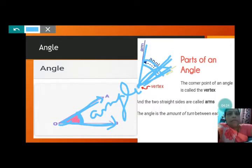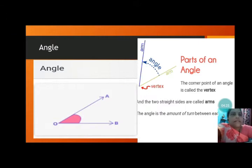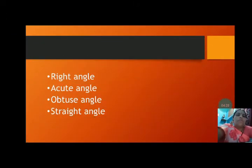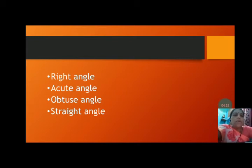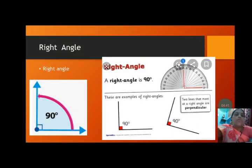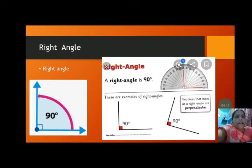We are going to see more angles. Now we are going to read about right angle, acute angle, obtuse angle, and straight angle — four types of angles. So, what is a right angle? A right angle is 90 degrees.